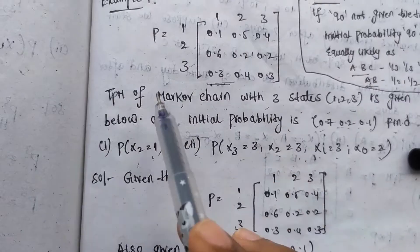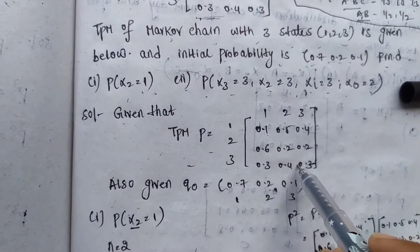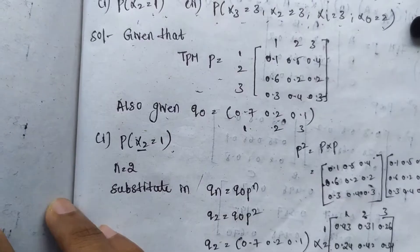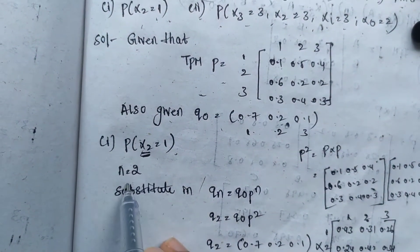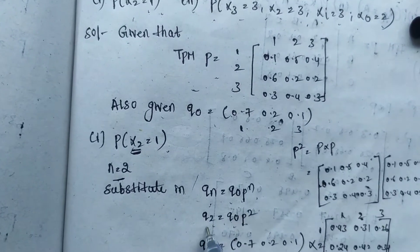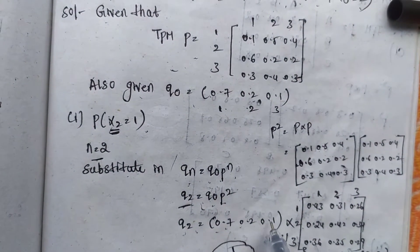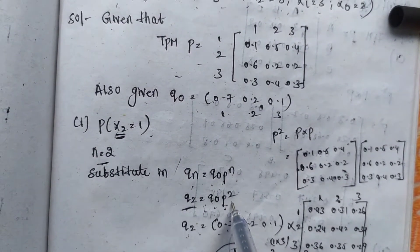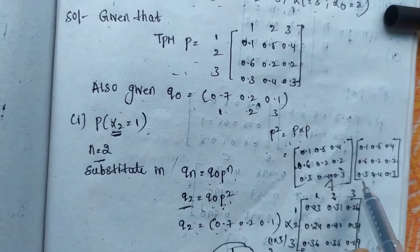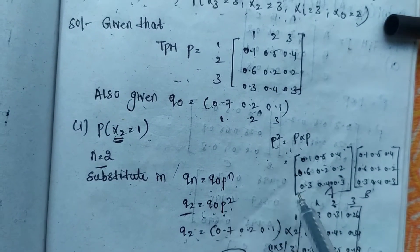We write the given TPM and given q(0) = [0.7, 0.2, 0.1]. For P(X2 = 1), since X2 means n = 2, using the formula q(n) = q(0) * P^n, we get q(2) = q(0) * P². We need to find P². We take one P as matrix A and another P as matrix B, then calculate matrix A into matrix B using the Casio calculator to get P².